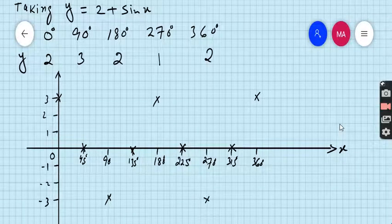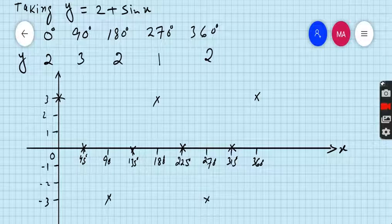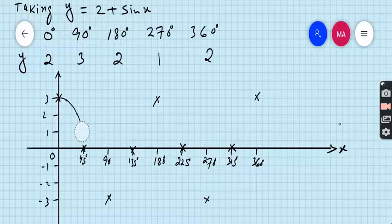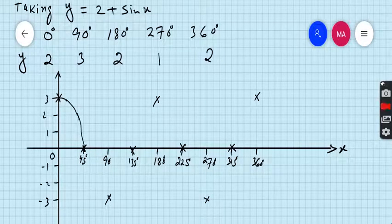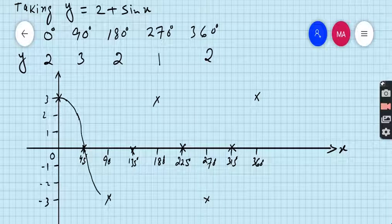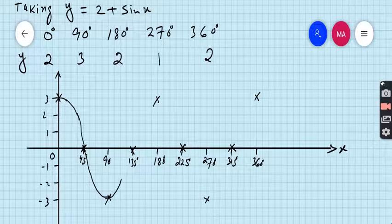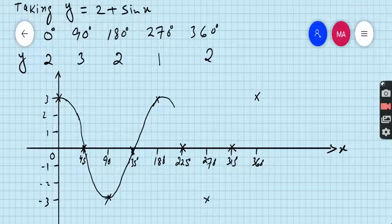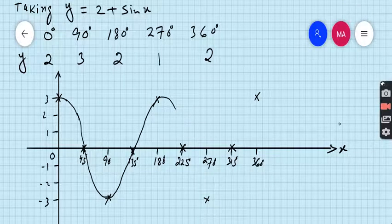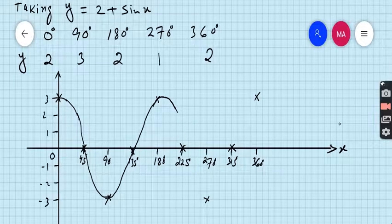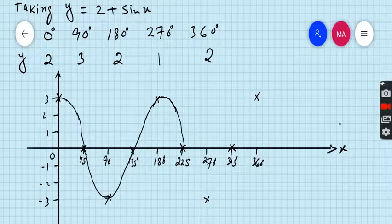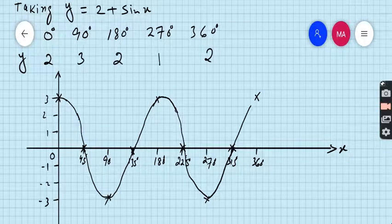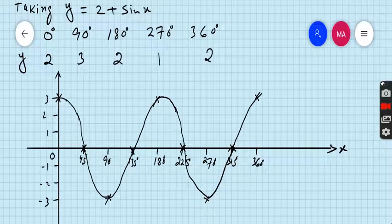Now join all the points without the use of pencil, freehand, and I am going to join, try my best. Here we go. This is the graph of y equals 3cos2x.